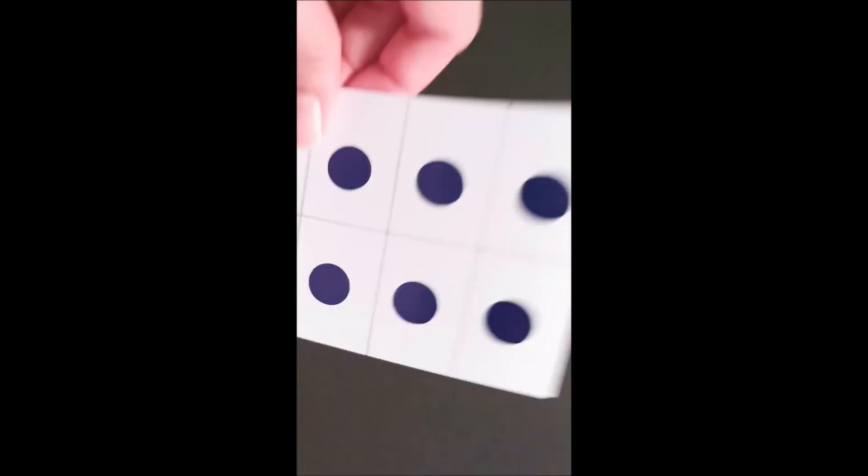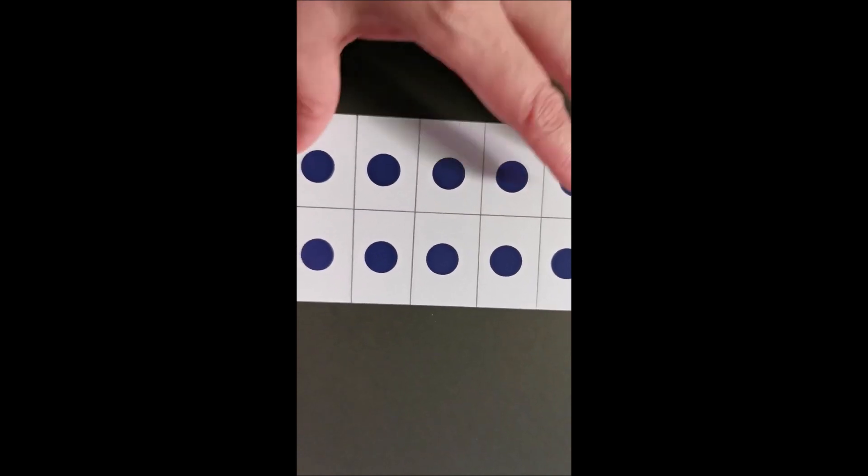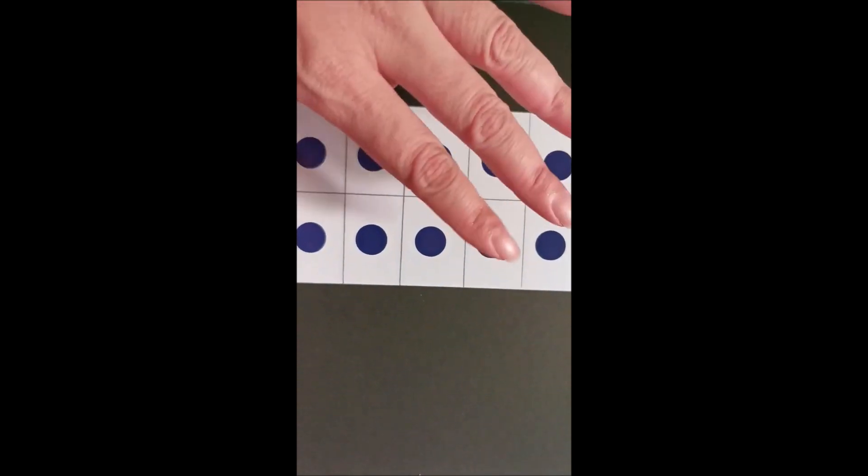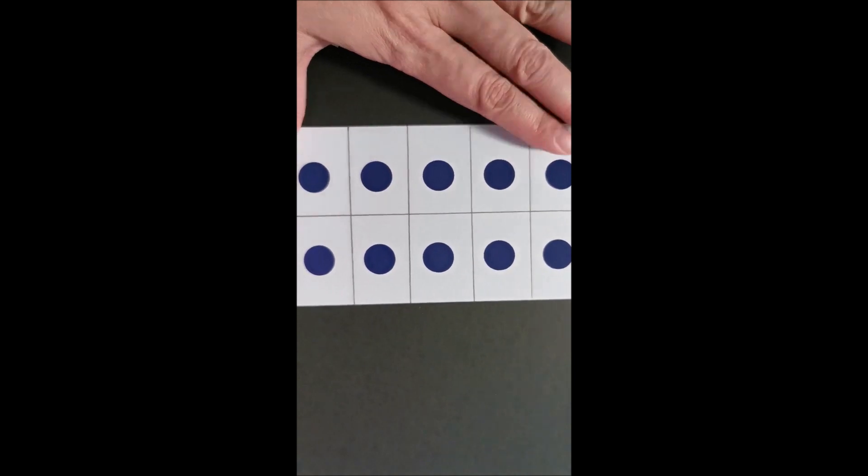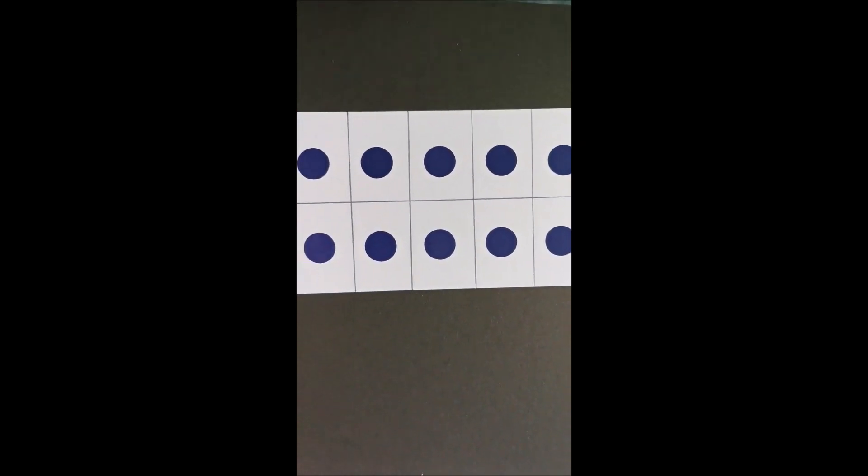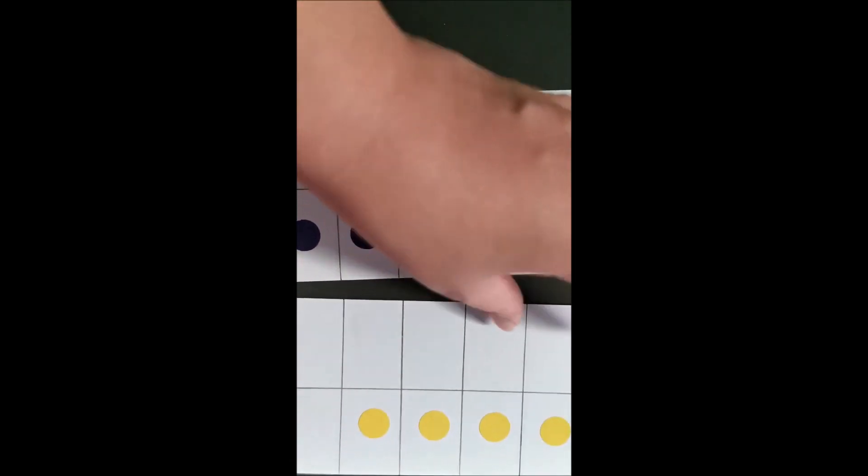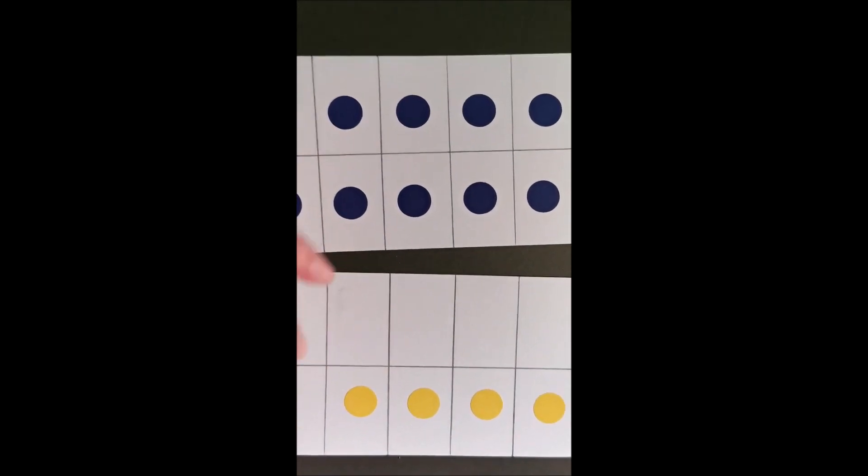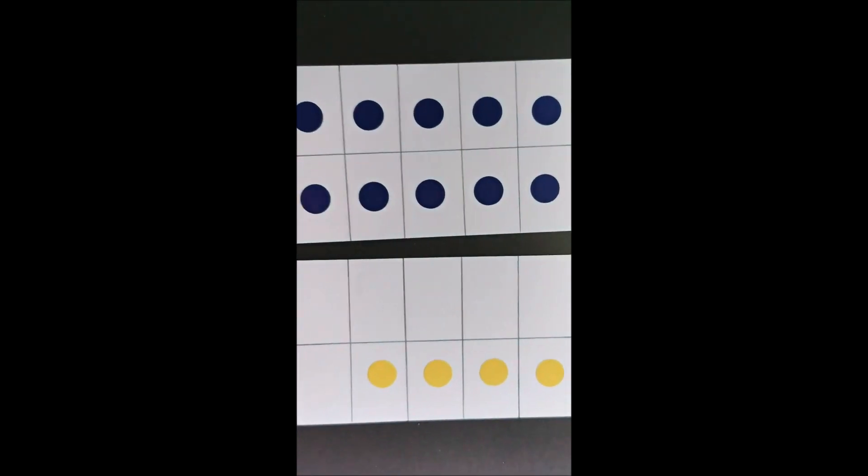And then it's also good for teaching place values. So if you use two sets of tens frames, we have the tens place here—a card that's all filled up with the dots—and partner it with another card that has just four dots in it.